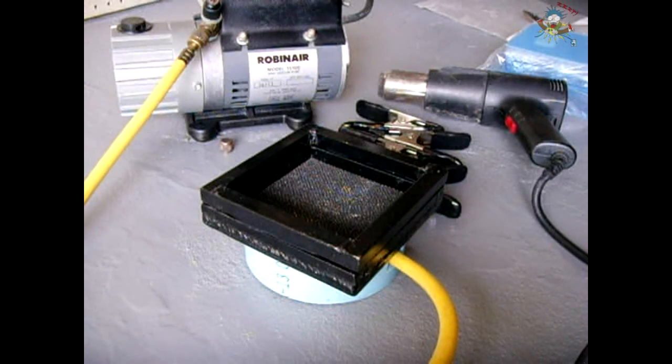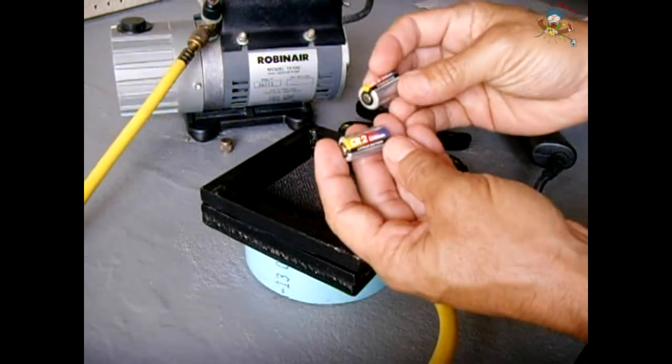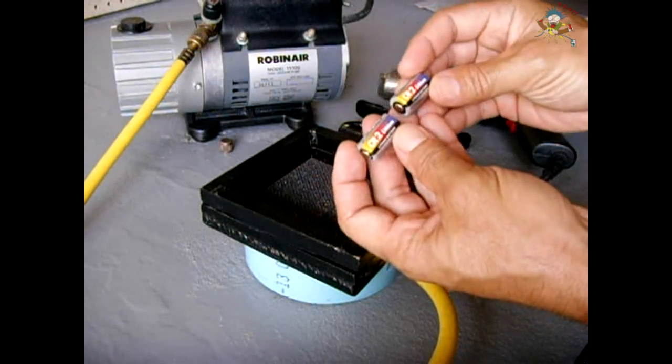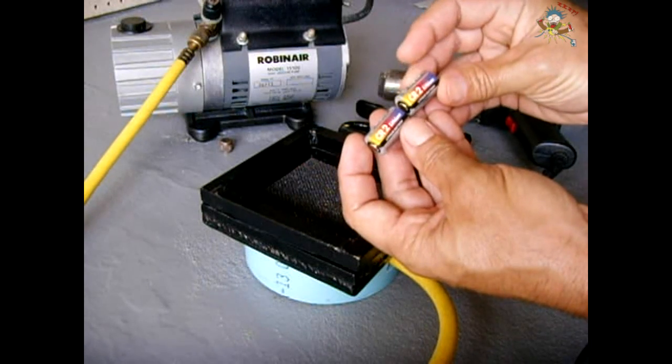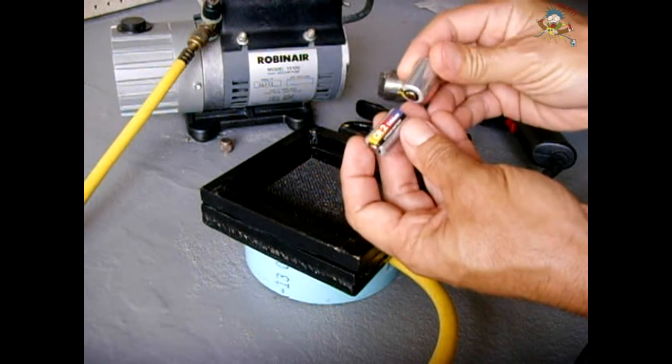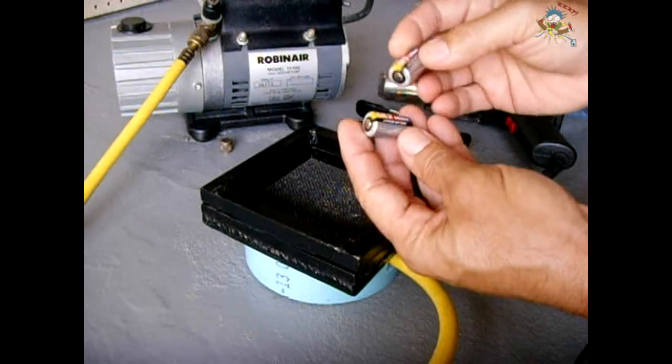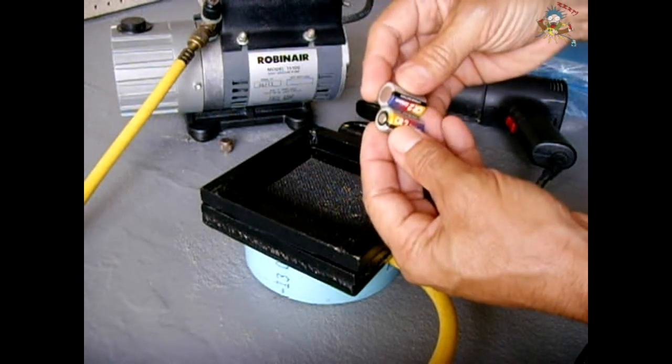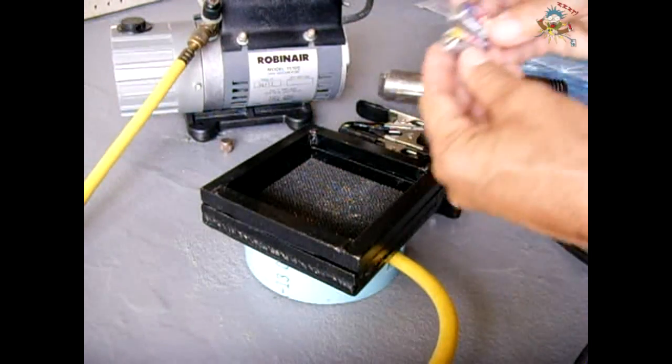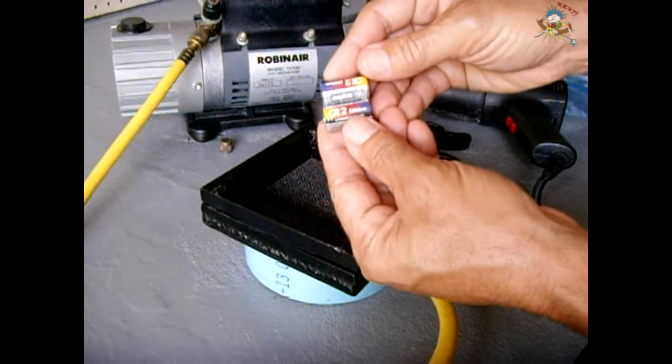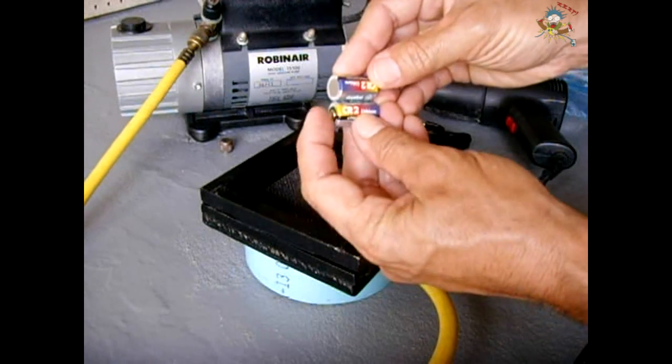In this video I'm going to show you how I vacuum form my own custom battery holders. In this case I'm going to take these two CR2 lithium batteries, they're three volts each, and make a nice little vacuum form battery holder.